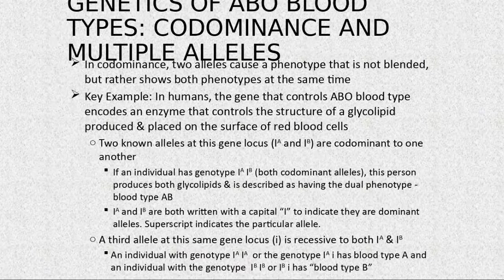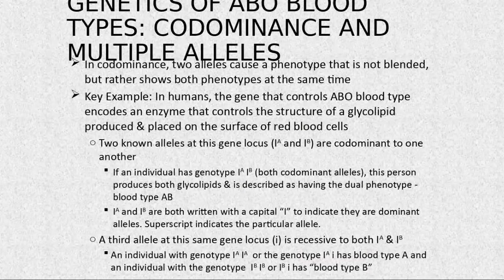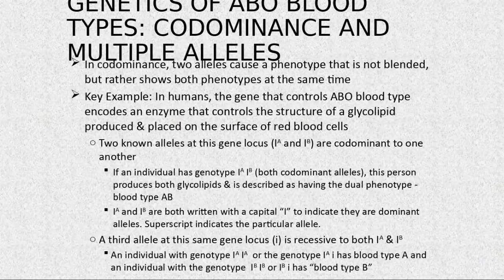An individual with genotype I-A, I-A or I-A with small i will have type A. An individual with genotype I-B has type B.